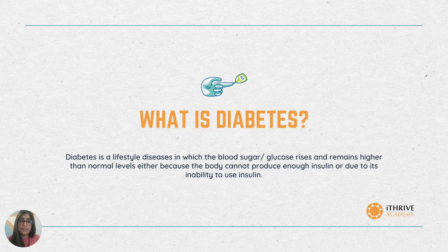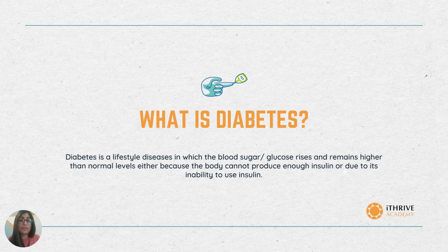Diabetes is a lifestyle disease in which blood sugar, also known as blood glucose, rises and remains at a higher level than normal. This can be because of two reasons: either your body is not able to produce enough insulin, or due to its inability to use that insulin.